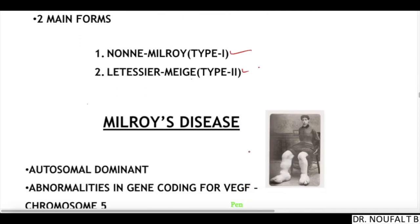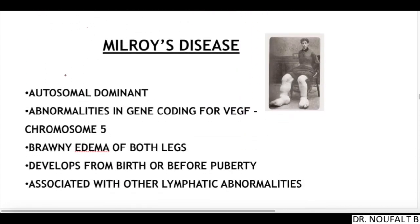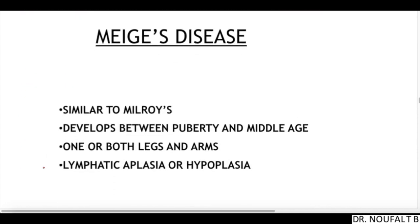Milroy disease is an autosomal dominant disease with an abnormality in the gene coding for vascular endothelial growth factor, located on chromosome 5. There will be bilateral edema of both legs, developing from birth or before puberty, with associated lymphatic abnormalities like hypoplasia or aplasia.